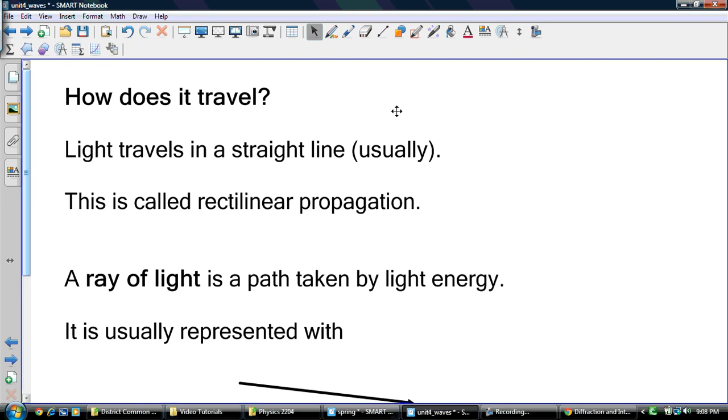Okay, so in order to know some stuff about light, we need to know how it travels. How does it travel? Light travels in a straight line, usually. We'll talk about special cases when it bends and things like that, but for the most part, when it's in one medium, it travels in a straight line. And this phenomenon is called rectilinear propagation.